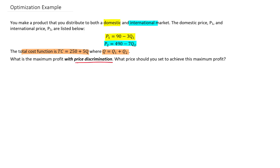With price discrimination, P1 is not necessarily equal to P2 — they're different prices. So we're going to look at each of these markets independently. Before doing that, I want to lay out a basic concept about revenue, cost, profit, and when maximization of profit is going to happen.